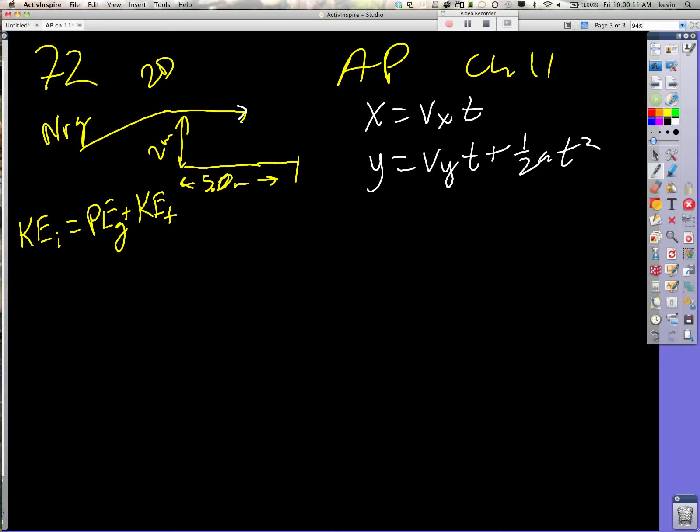So we can just take this T. Oops. (1/2)*M*VI² = M*G*H + (1/2)*M*VF². That cancels there, and we get VI = sqrt(2GH + ...). And basically this is X over sqrt(2Y/G) squared.